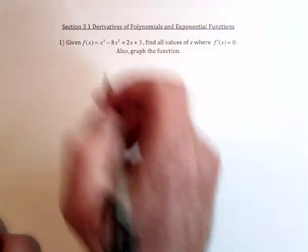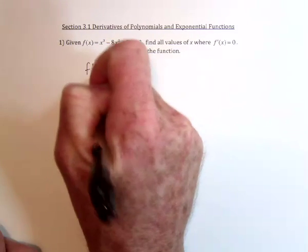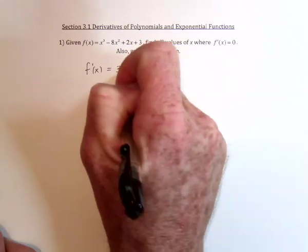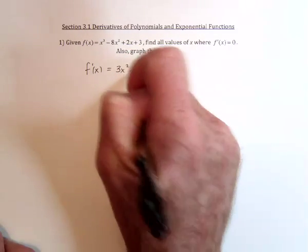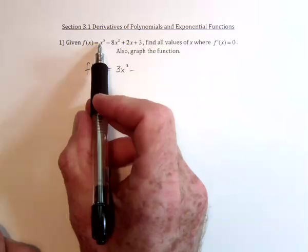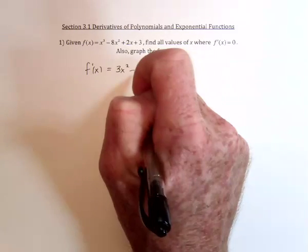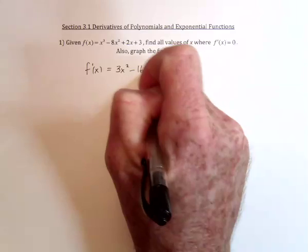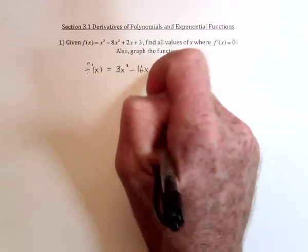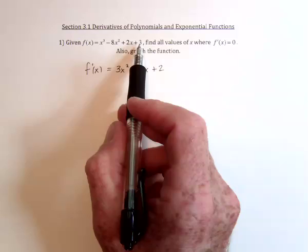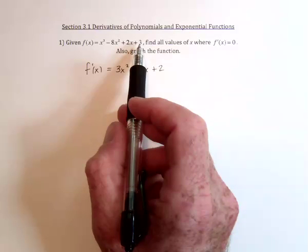First of all, take the derivative. The derivative is going to be 3x squared - bring the exponent down and multiply, then subtract one from the exponent. Next is -16x plus 2. And the derivative of a constant is always zero.